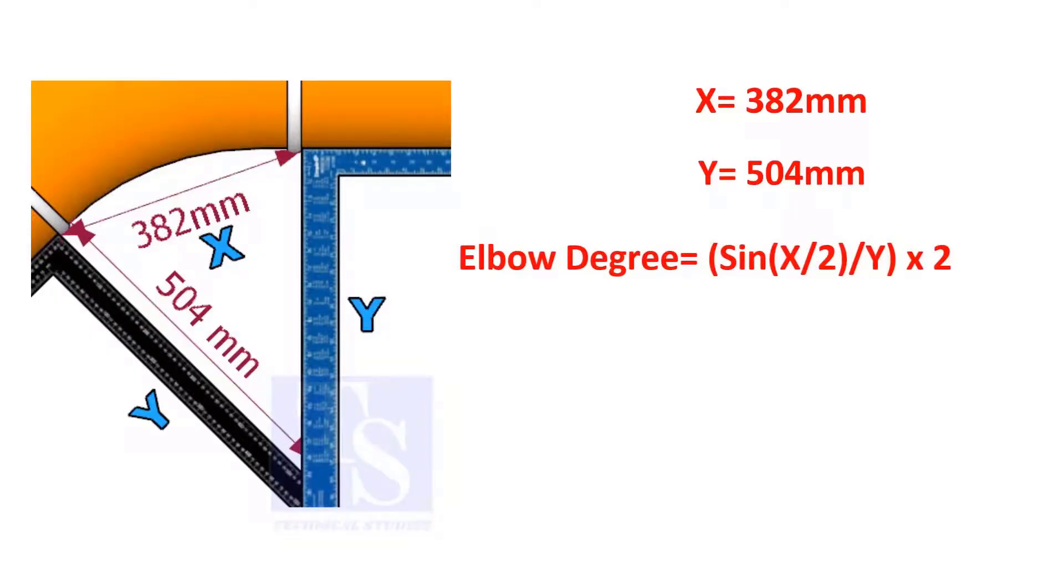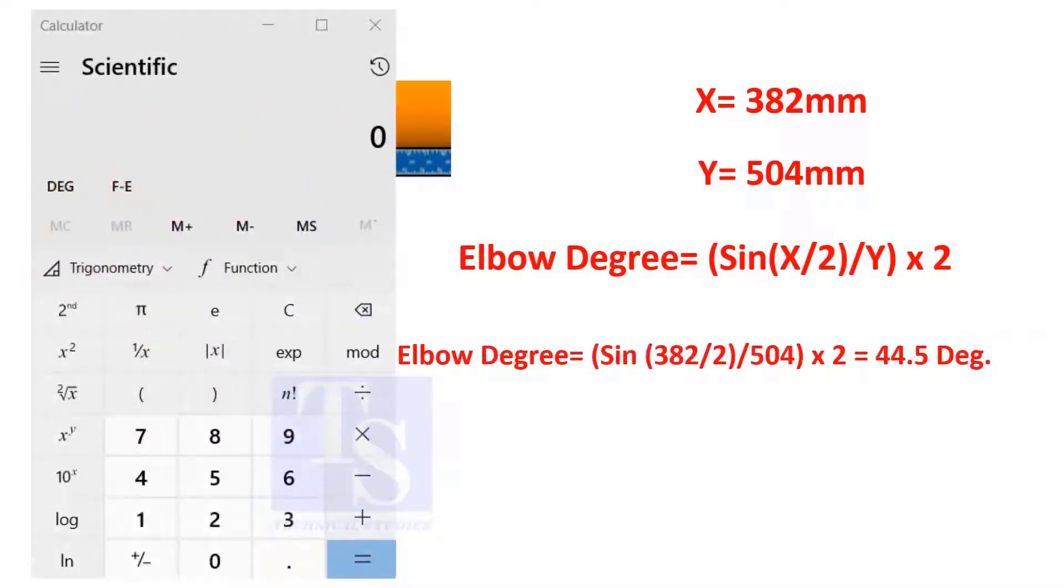Divide half of X by Y, take the sine inverse, and then multiply by 2. You can also use this method on pipe spools to check distortion caused by welding.